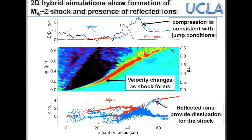The ambient has been swept out and sped up to Mach 2. Most importantly, a ring in phase space is a signature of reflected ions providing dissipation in this shock. The hybrid code does not include the turbulence dissipation — only reflected ions — and this is the perpendicular case.